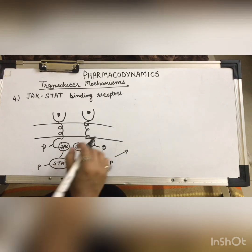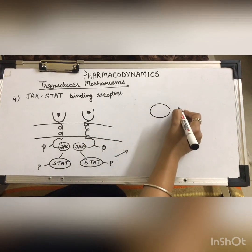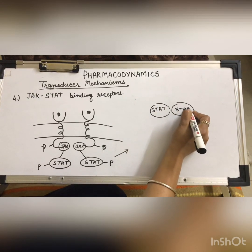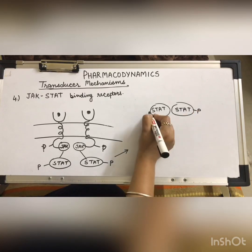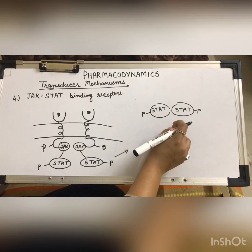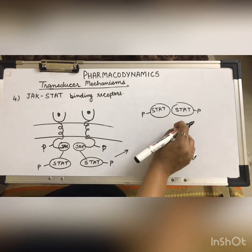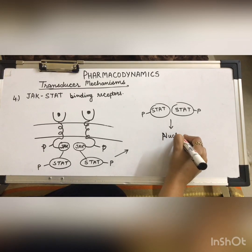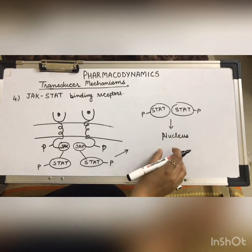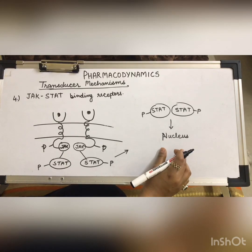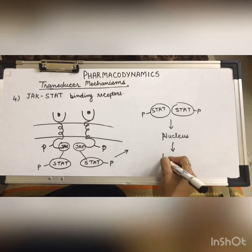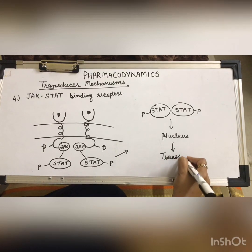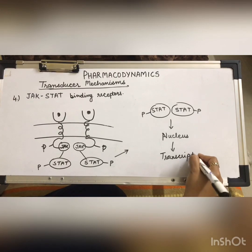When STAT molecules bind to JAK, the tyrosine residues of the STAT molecules are also phosphorylated. After phosphorylation, the STAT molecules are activated and a STAT dimer is formed. This dimer dissociates from the receptor and translocates to the nucleus, where it can regulate gene transcription and produce a response.